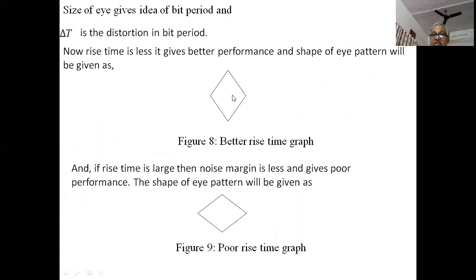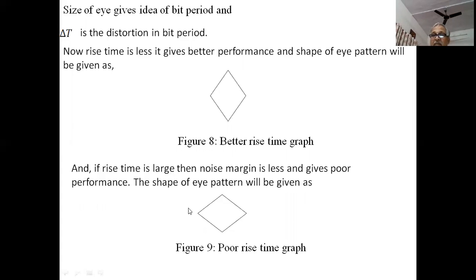The size of the eye gives an idea of the bit period, and delta t is the distortion in the bit period. When rise time is less, it gives better performance and the eye pattern shows a larger angle, meaning sensitivity is large. Conversely, if rise time is large, the noise margin is less and the system gives poor performance — the eye pattern shows less vertical height in comparison, indicating poor performance in terms of rise time.